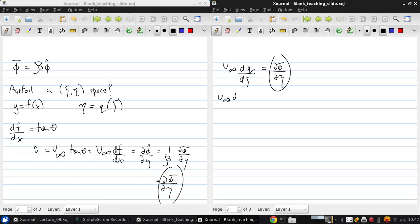So v infinity dq/d eta is the same as v infinity df/dx. So the v infinities cancel. And what we get is that df/dx equals dq/dc. What this says is that the shape of the airfoil in the transform space is the same as in the original space.